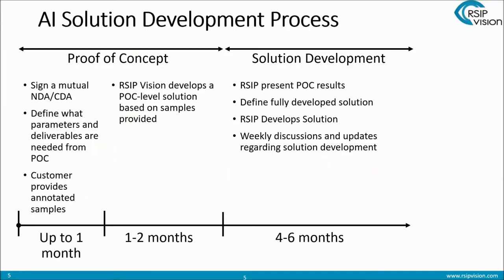Let me tell you a little bit about the process. This industry is very far from standardization, so I can't just tell you this is the solution and this is the price. So we start with the proof of concept. The proof of concept enables us to do two things. The first thing is to show you something that would make things clearer for you with regards to AI, so that you'll just see that this could be relevant for whatever you need to achieve.